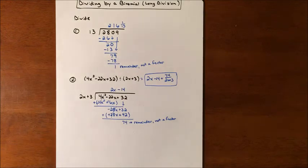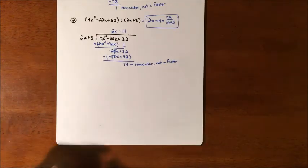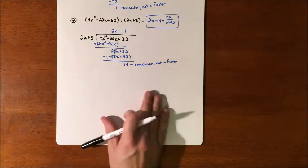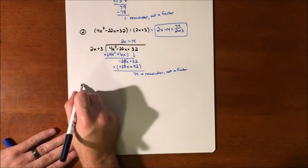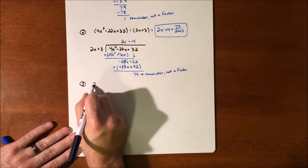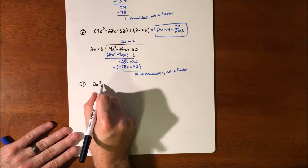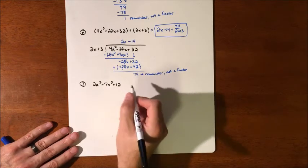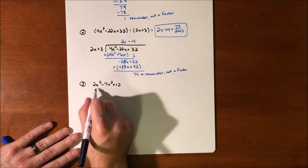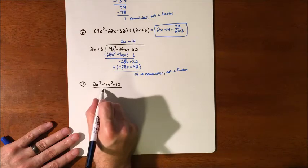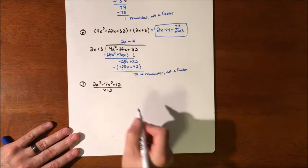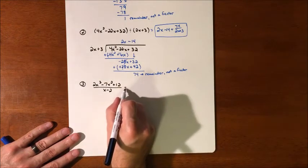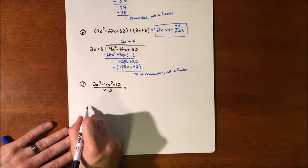So let's do one more. We're going to take 2x³ minus 7x² plus 12, and we are going to divide by x minus 2. We're looking for whatever that becomes.